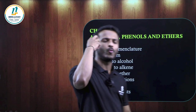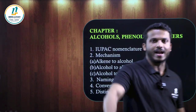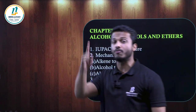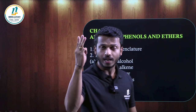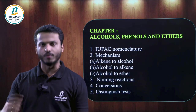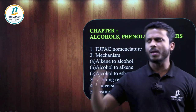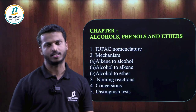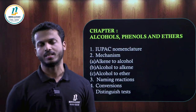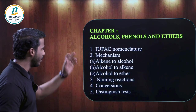Naming reactions in this chapter: Kolbe's reaction (conversion of phenol to salicylic acid), Reimer-Tiemann reaction (conversion of phenol to salicylaldehyde), and Williamson ether synthesis (haloalkane treated with sodium alkoxide gives ether). Distinction tests: Lucas test — used to distinguish primary, secondary, and tertiary alcohols. Neutral ferric chloride (FeCl₃) test — a test for phenol; treating with neutral FeCl₃ gives a violet-colored complex.